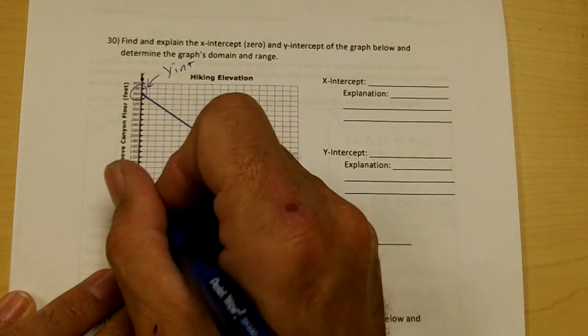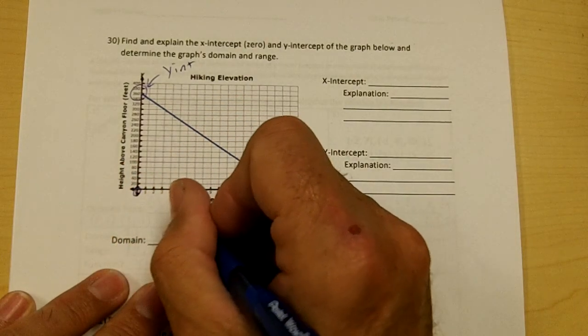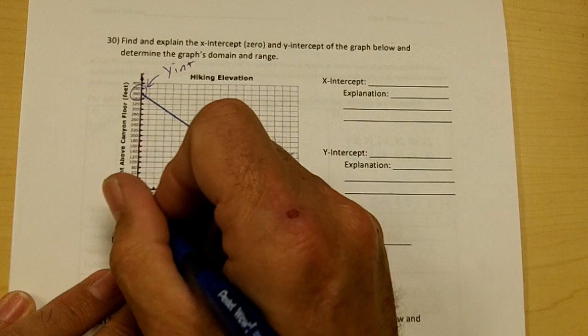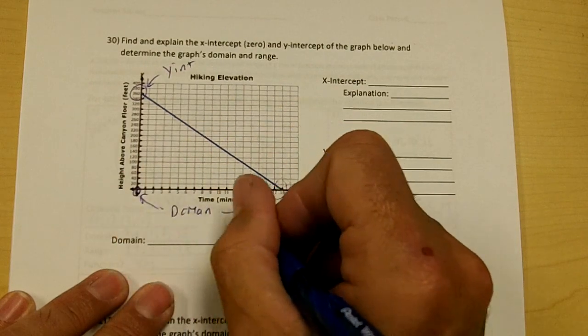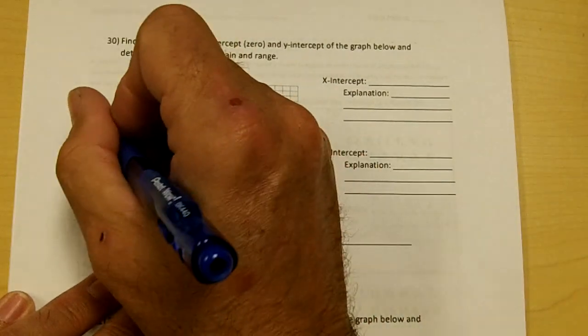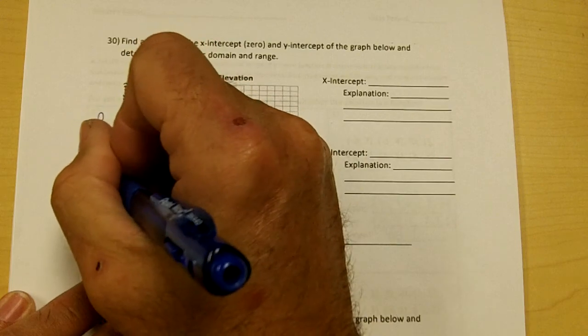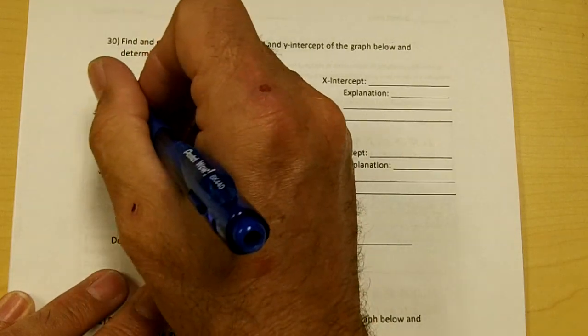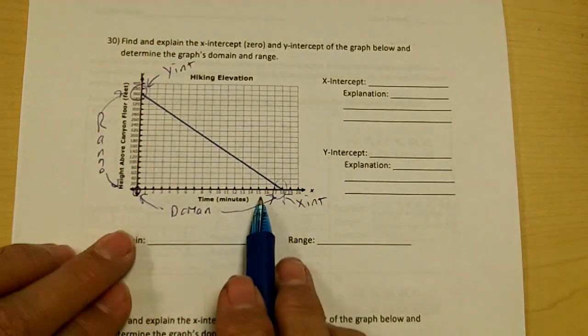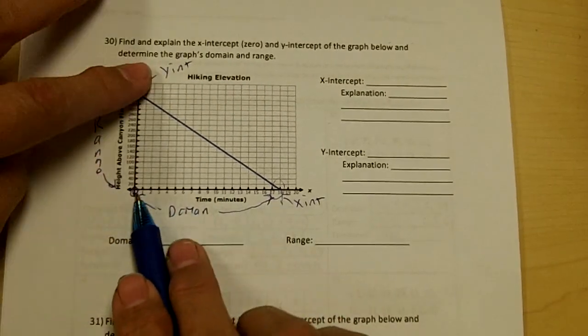My domain would go from here to here. My range would go from here to here. So my domain goes from here to here and my range goes from here to here.